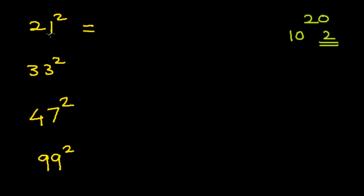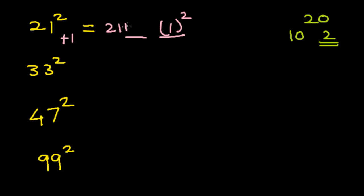In the first step, we subtract the base from the number: 21 minus 20 is plus 1. To find the digits at the units place, that is 1 squared. Then find the digits at the tens and hundreds place: that is 21 plus 1, and we multiply this by the multiplying factor 2. So 1 squared gives us 1, 21 plus 1 is 22, multiplied by 2 is 44. The answer is 441.